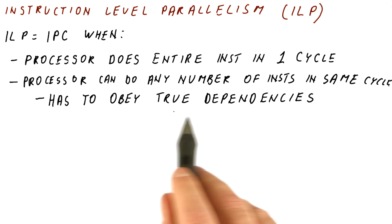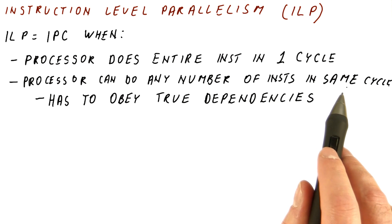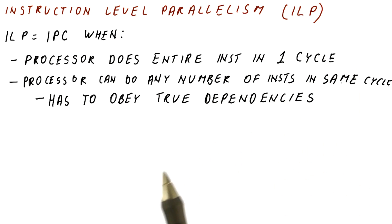But it still has to obey true dependencies. So if one instruction depends on another, then they cannot be done in the same cycle. You have to first do one and then the one that needs its result.